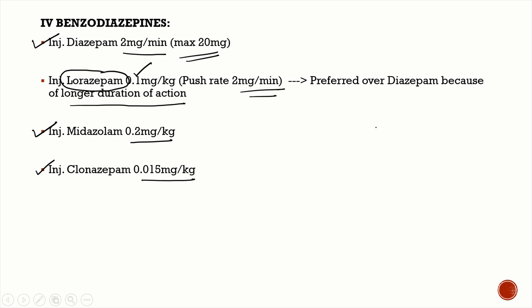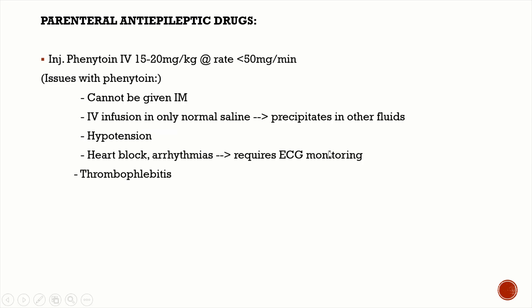If you're not able to secure an IV line, don't wait — you can give the benzodiazepine intramuscularly. The patient may be continuously seizing and you might not be able to secure an IV line easily, so go ahead and give the benzodiazepine IM. After benzodiazepines, your next drugs are parenteral anti-epileptic drugs.